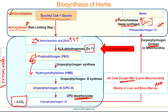As a recap, even though the cycle initiates and finishes in mitochondria, many steps take place in the cytoplasm. As the first step, succinyl-CoA combines with glycine in the presence of ALA synthase to form ALA, and this is the rate-limiting step of the entire heme synthesis pathway.